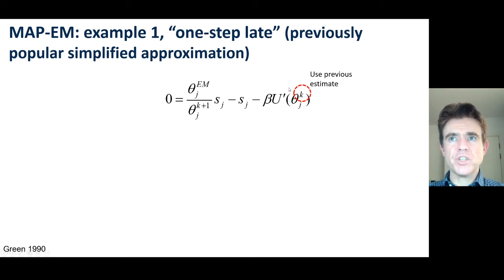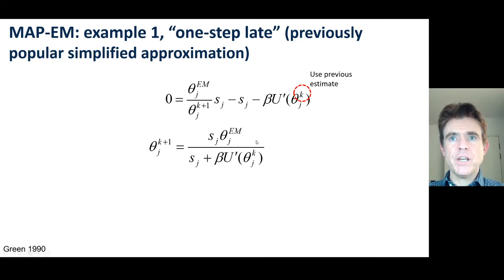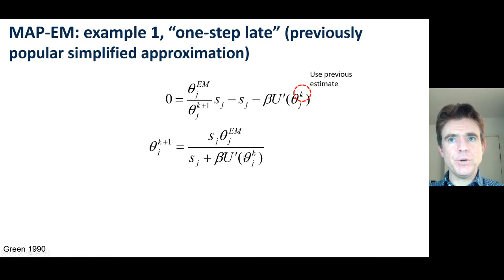With the one-step-late method, the previous or current estimate of theta is plugged in to calculate the derivative of the energy, and then the expression is rearranged to solve for the next estimate theta_{k+1}. It's given by a combination of the EM update along with the derivative of the energy function evaluated at the current estimate.